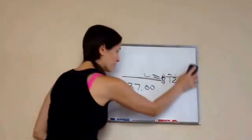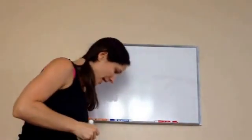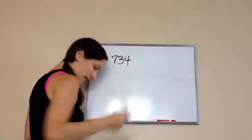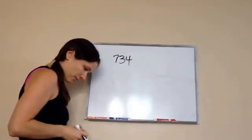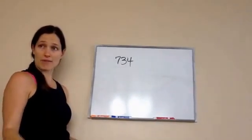Let's try another one. This is about combining. We're combining amounts. So, Kayla had 734 stamps in her collection. Then her uncle gave her some more.